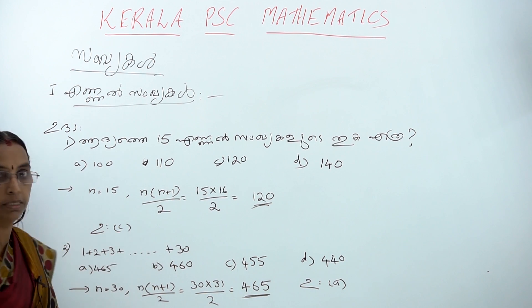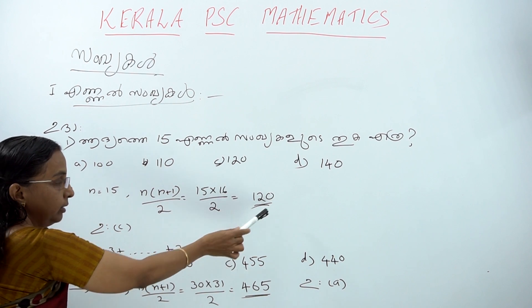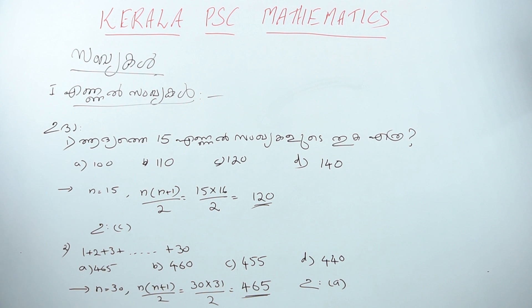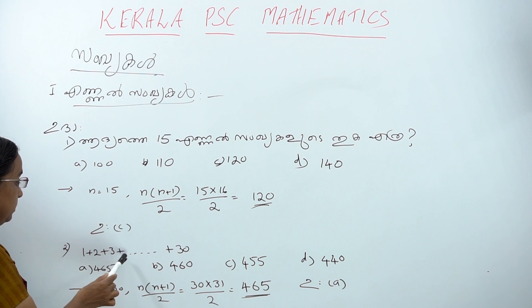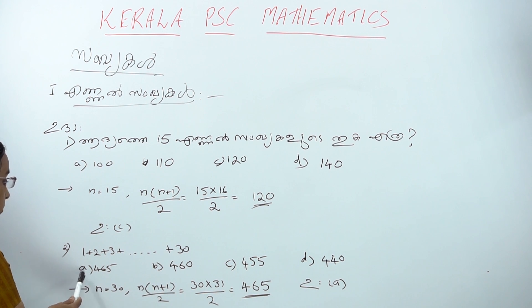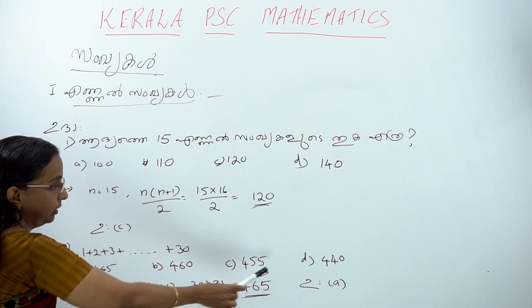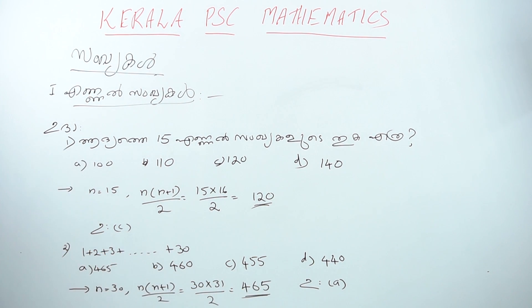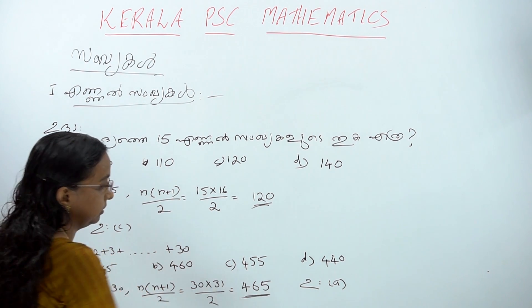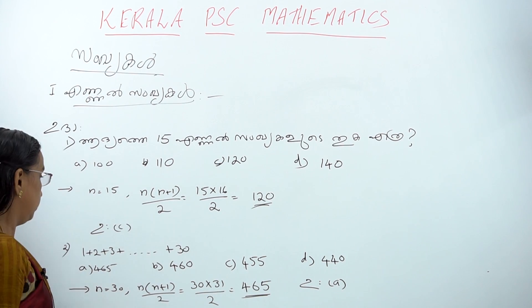15 into n+1 by 2, where n+1 is 16. We will add: 1 + 2 + 3 + ... + 30. We will add up to 30. The options are: a is 465, b, c, d. Using n(n+1)/2, the answer is option a.